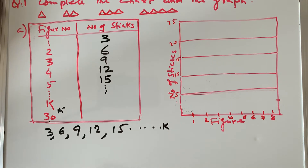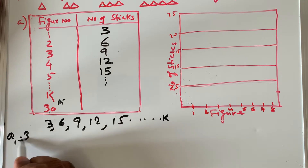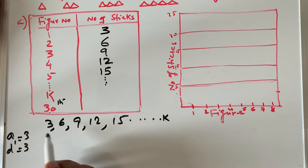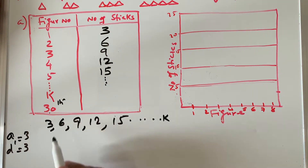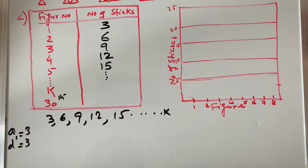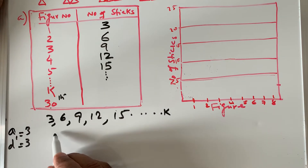What is a1? The first term, a1, is three. What is the common difference? Six minus three is three, nine minus six is three — whenever you subtract consecutive terms you get the same common difference. So this number pattern is increasing by three: start with three and add three to get the next term.